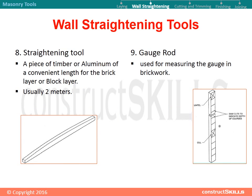Wall straightening tools. The straightening tool is a piece of timber or aluminum of a convenient length for the bricklayer or block layer, usually 2 meters. The gauge rod is used for measuring the gauge in brickwork.